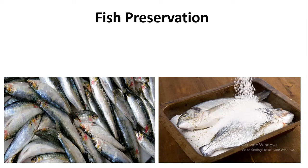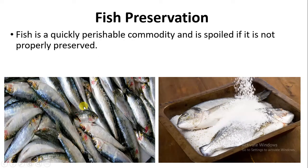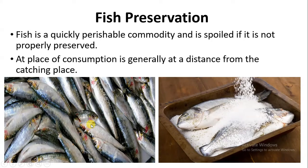Hello students, welcome. Today our new topic is fish preservation. Fish may zyada water content honi ke vajay se decomposition ka process aur bhi zyada fast ho jata hai. That is why fish are called a quickly perishable commodity. So isi spoilage ko prevent karne ke liye fish ka preservation karna zharuuri hai, and that is why proper methods of fish preservation are important.